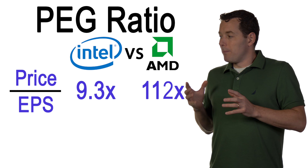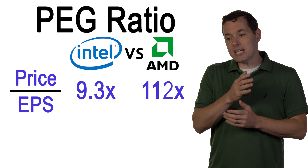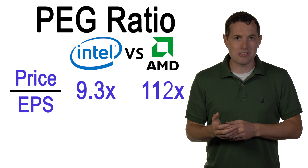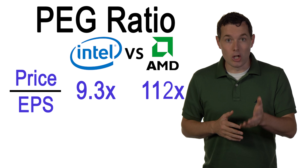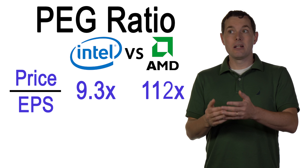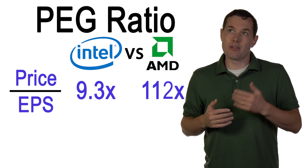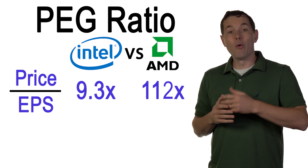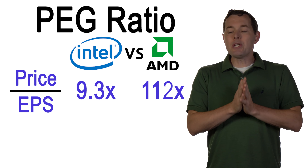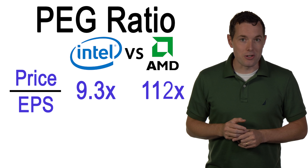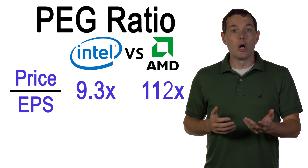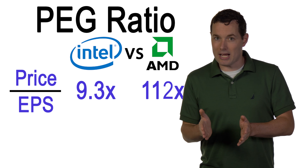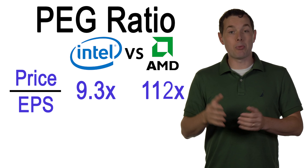So what does this mean? To simplify it, it means that for every dollar of earnings that the company generates — for Intel, we'd be willing to pay $9 for $1 of earnings. We pay nine and the company earns $1 for every $9 that we pay. And if we bought AMD, we would be paying $112 for a dollar in earnings. Now, if we knew nothing else but this information, we might look at this and say, well, I would never pay 112 times earnings when there's another company that I can only pay 9.3 times earnings for.